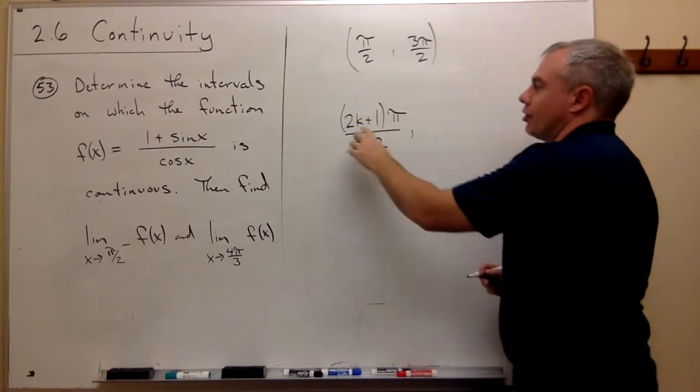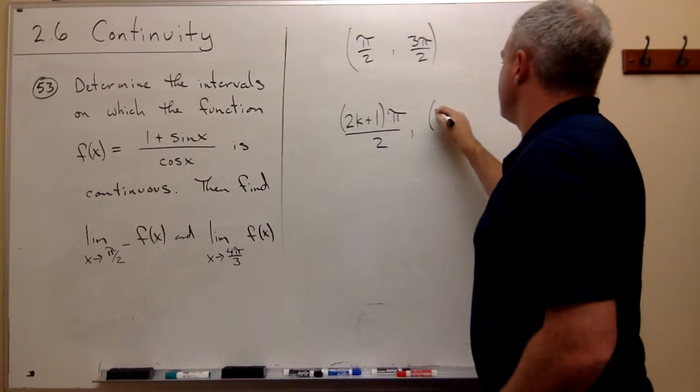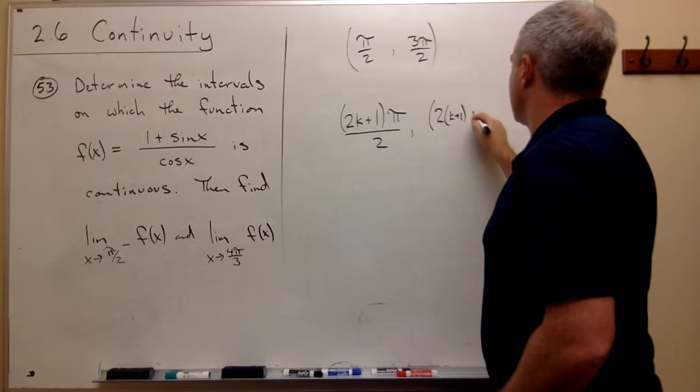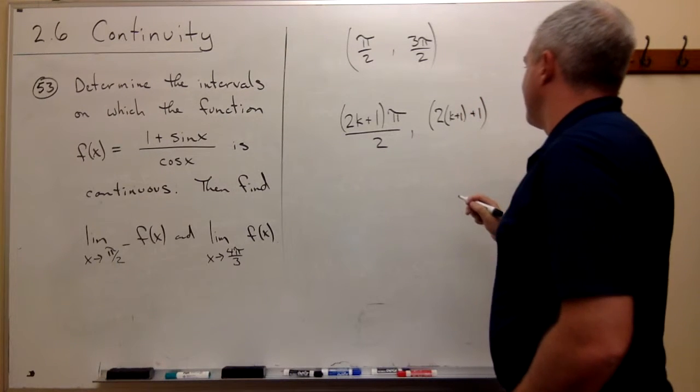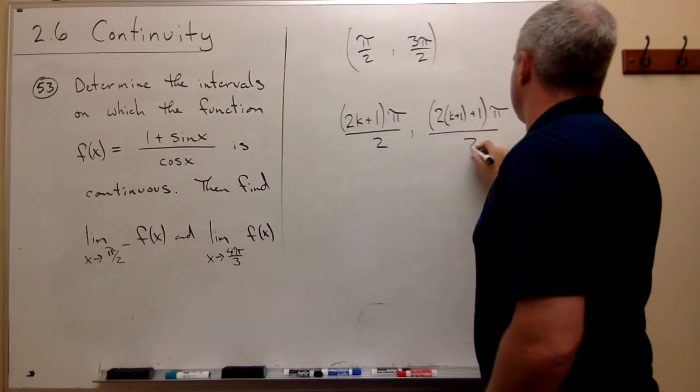But the next odd number, 2k plus 1 over 2, would be 2 times (k plus 1) plus 1 pi over 2.